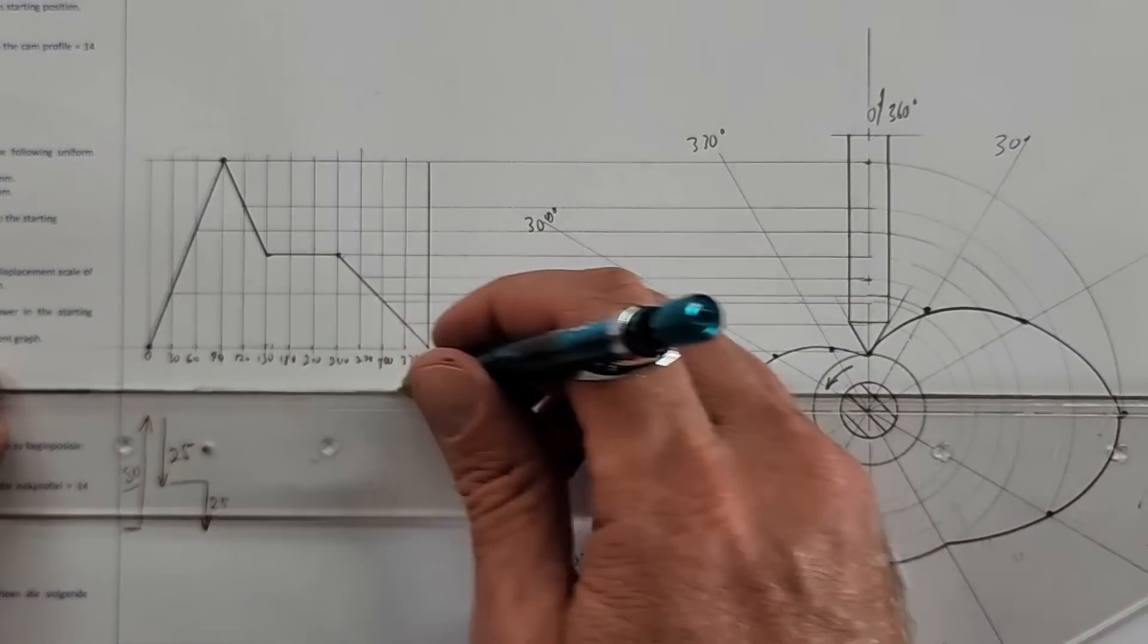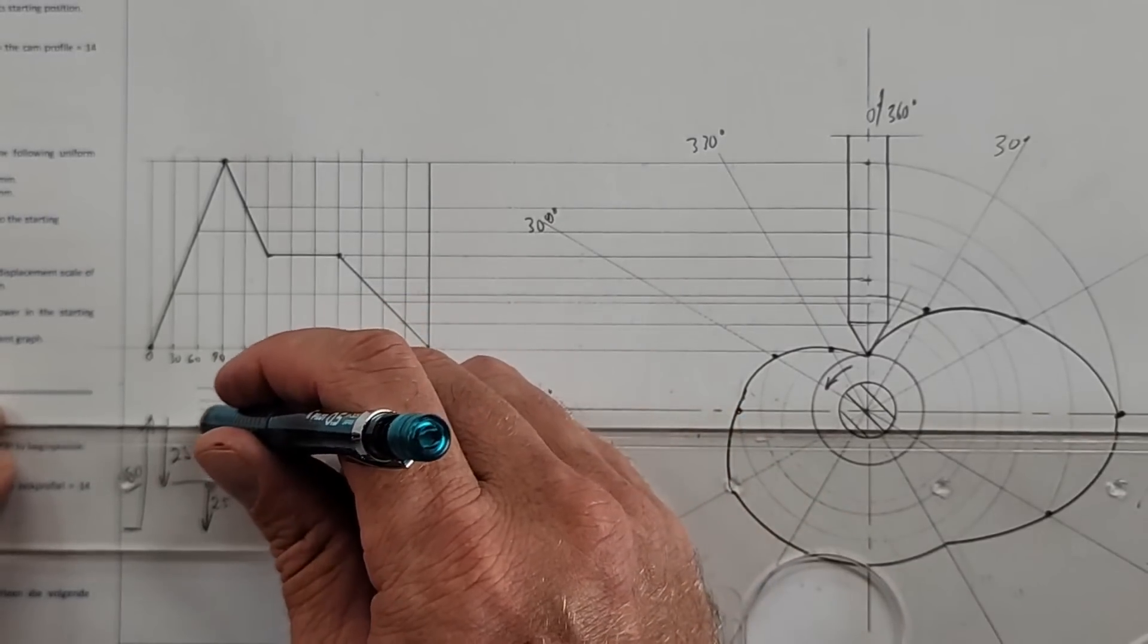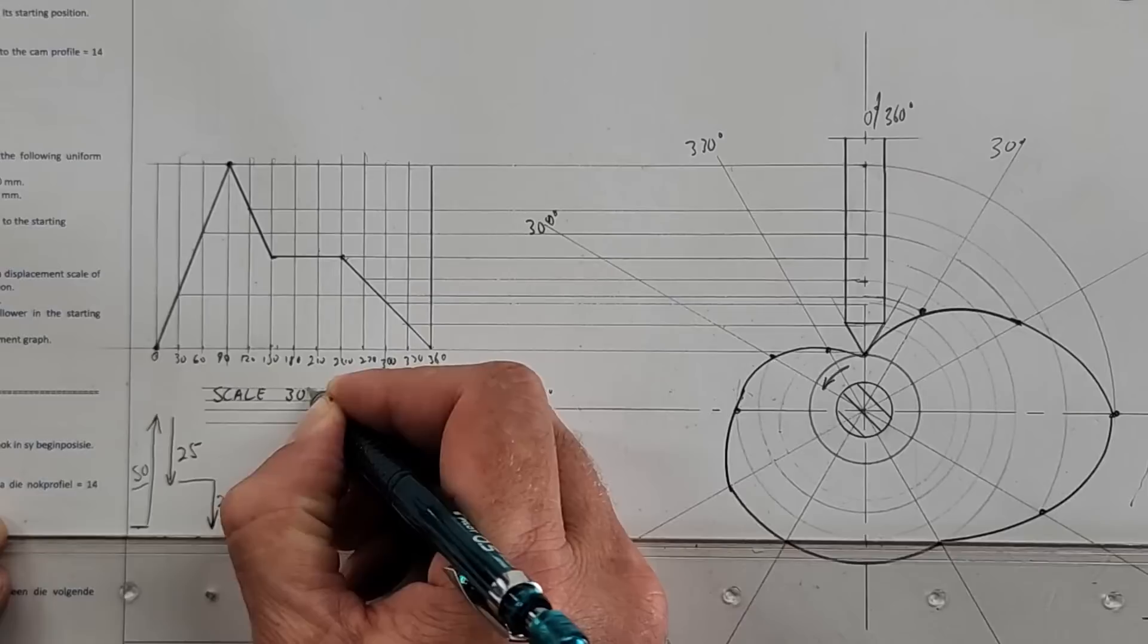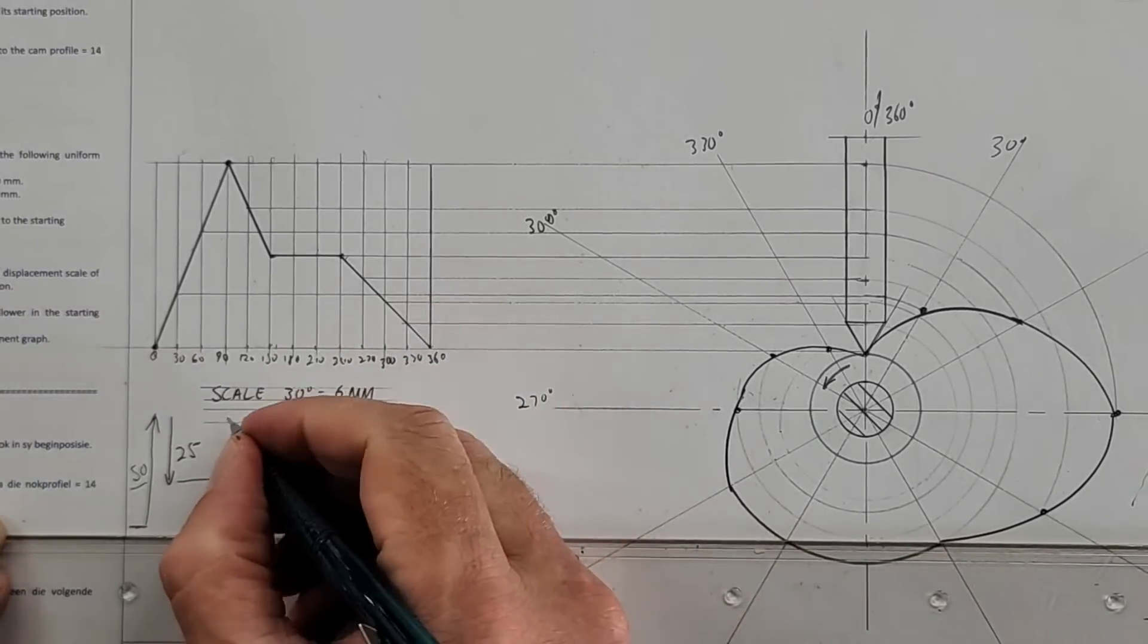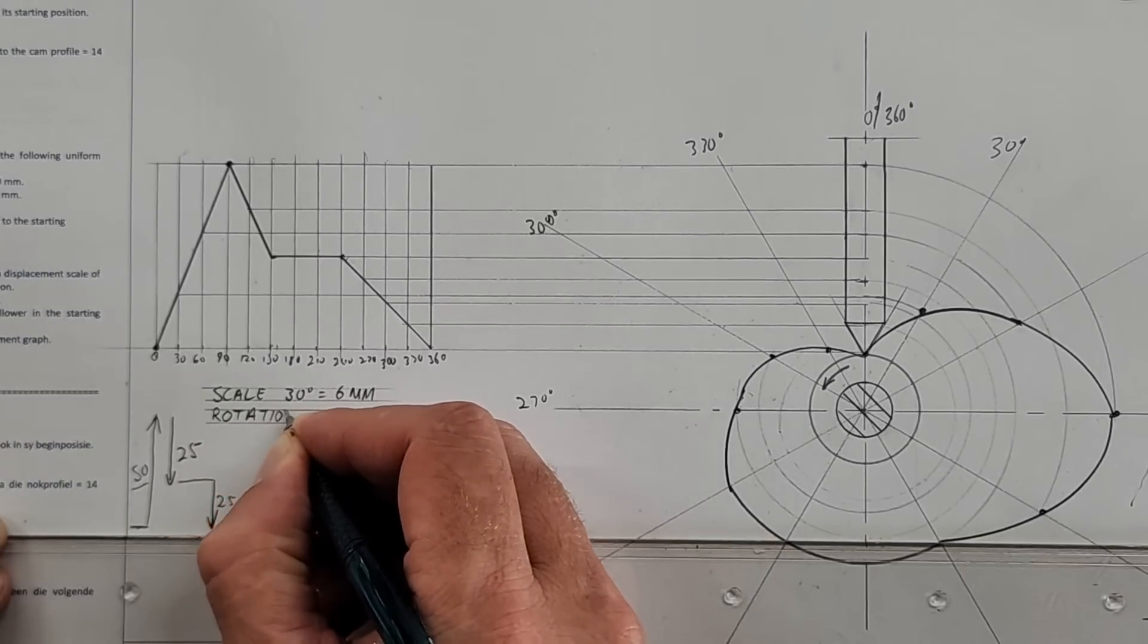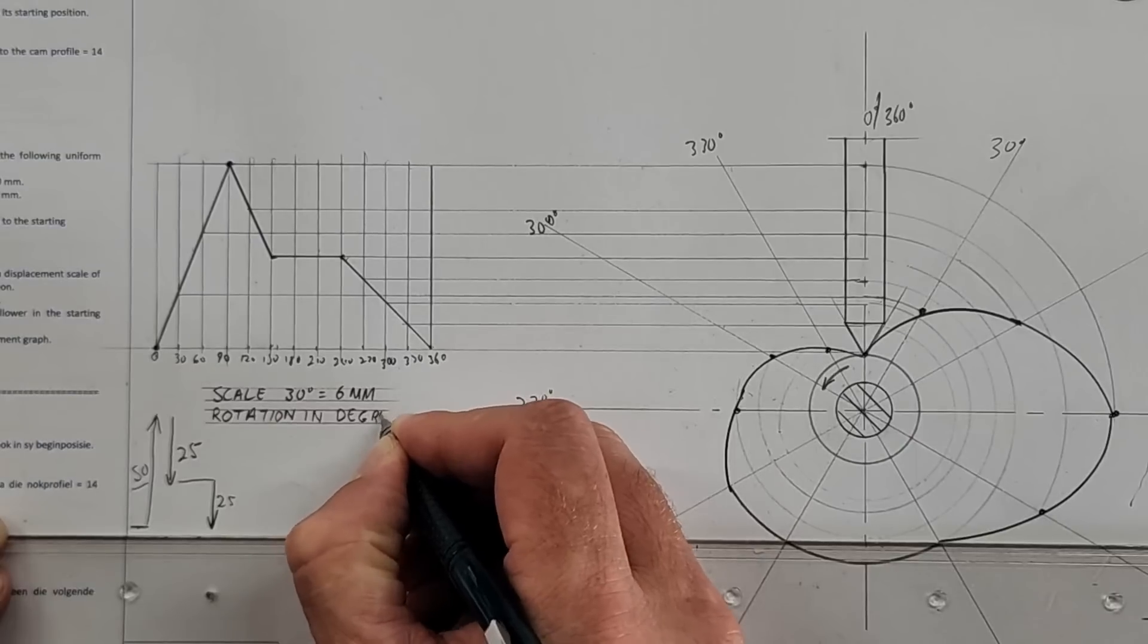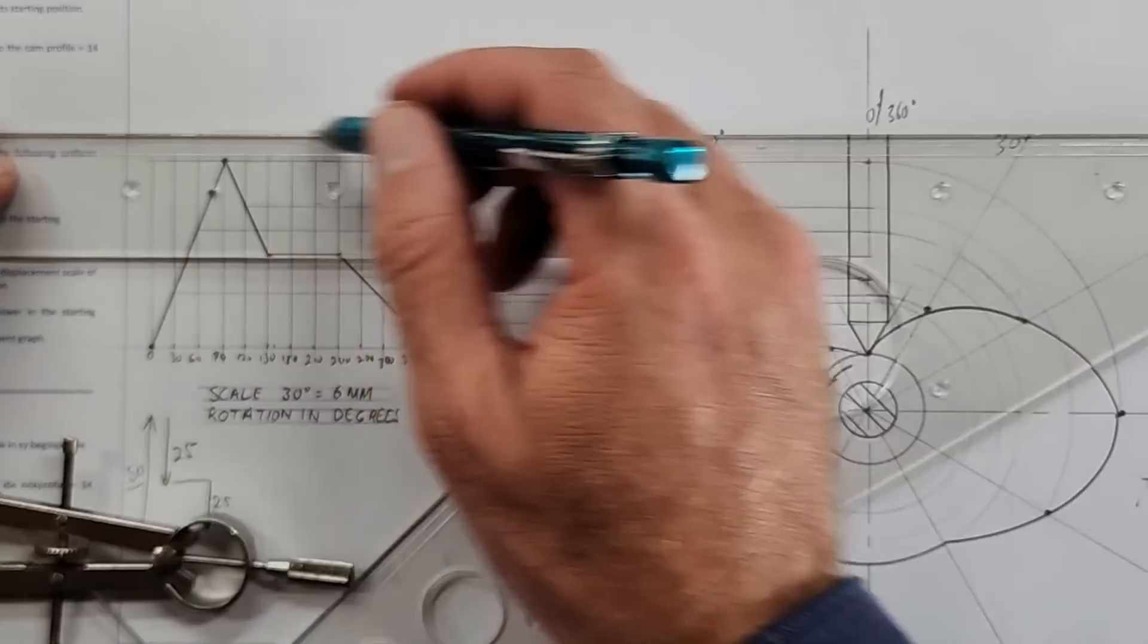A couple of last things that we have to do: we have to add some labels. One label that you can't forget here is the scale. All of these marks: 30 degrees is equal to 6 millimeters. Rotation is in degrees. Any questions? And then here of course the label displacement diagram.